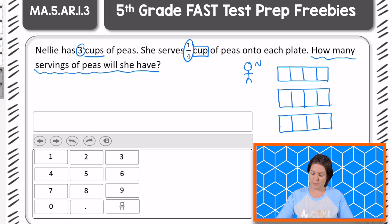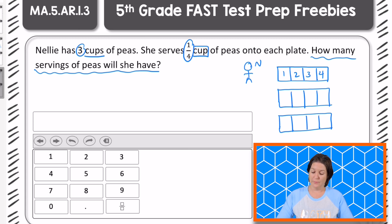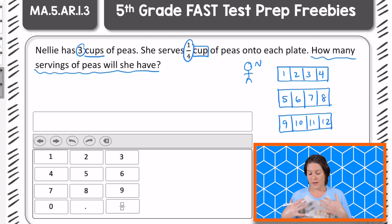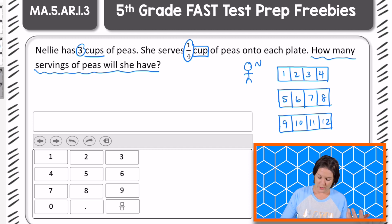Onto each plate. So this would be plate number one, plate number two, plate number three, plate number four, plate number five, plate number six, plate number seven, plate number eight, plate number nine, plate ten, plate eleven, and plate twelve. So how many servings of peas will she have? She will have 12 servings.